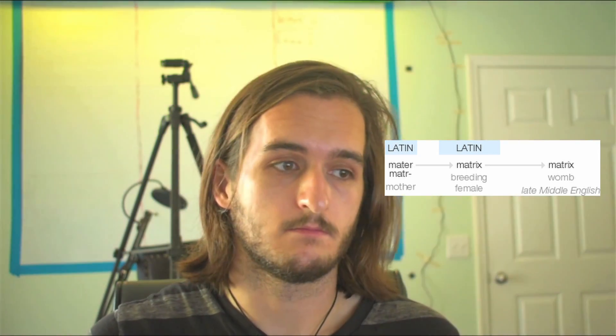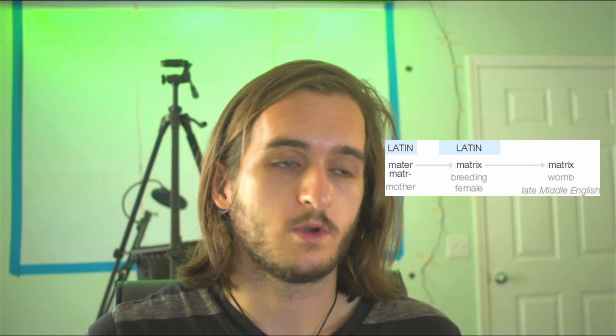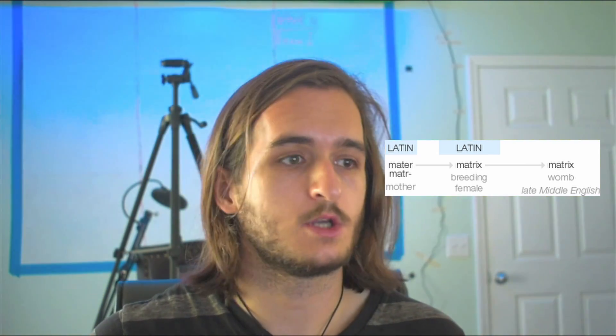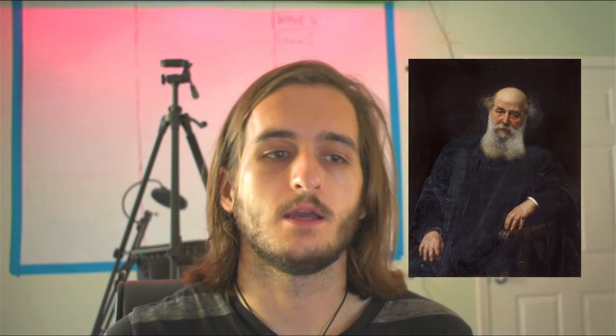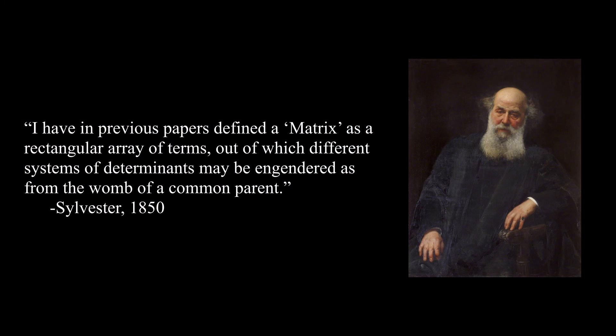The term 'matrix' is said to be notation used by James Joseph Sylvester in 1850. The thing that the matrix is the 'mother' of is what we're actually talking about this week: determinants and minors. Sylvester put it as: 'I have in previous papers defined a matrix as a rectangular array of terms out of which different systems of determinants may be engendered, as from the womb of a common parent.'